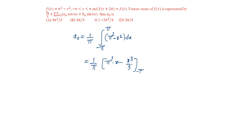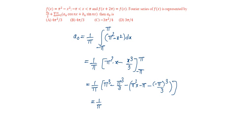Evaluating from minus π to π, that is equal to 1 by π: (π³ minus π³ by 3) minus (π² times minus π minus of minus π³ by 3). That is equal to 1 by π times (2π³ by 3 plus π³ plus π³ by 3), which equals 4π³ by 3π, that is equal to 4π² by 3. The answer is option A.